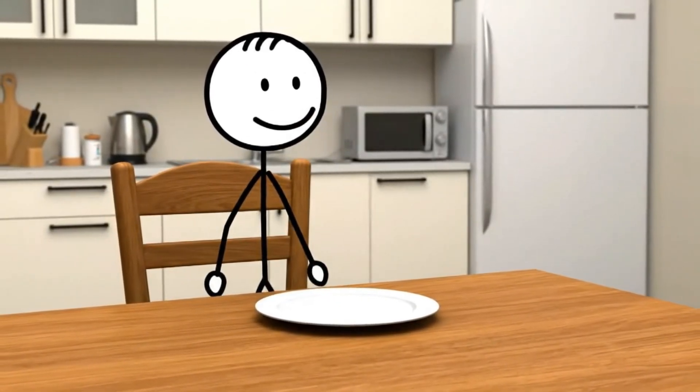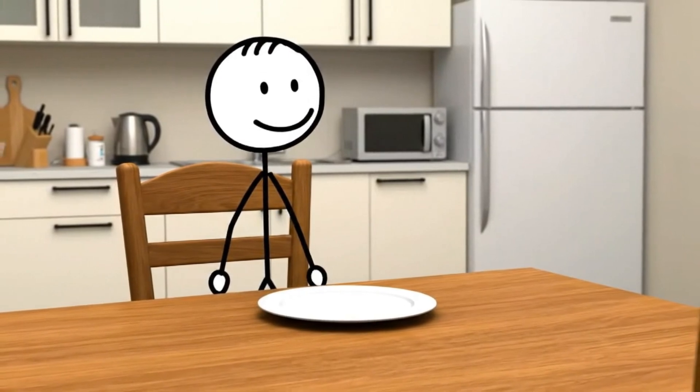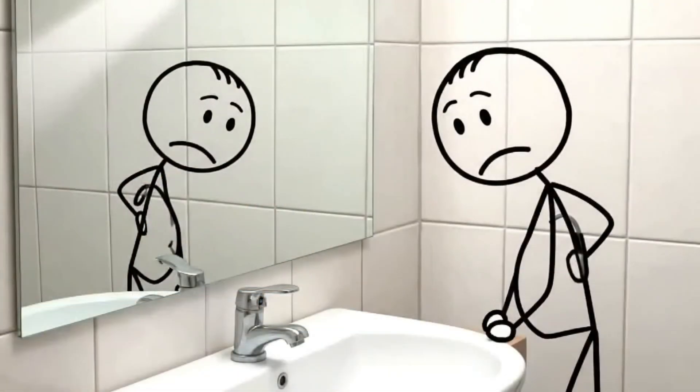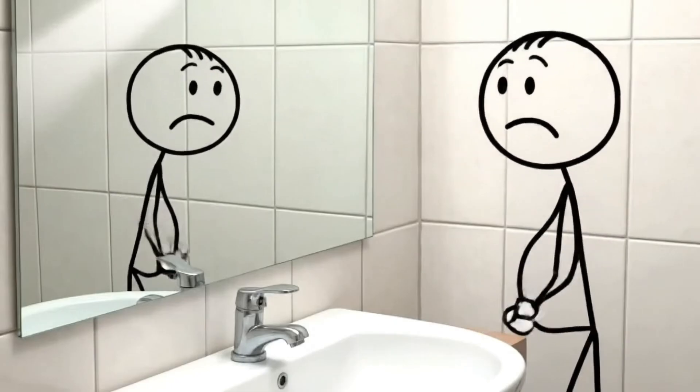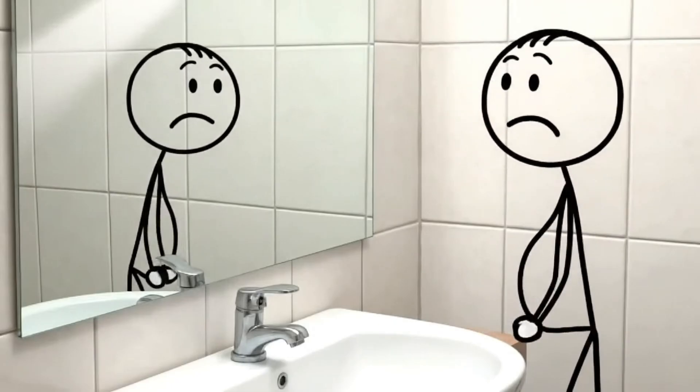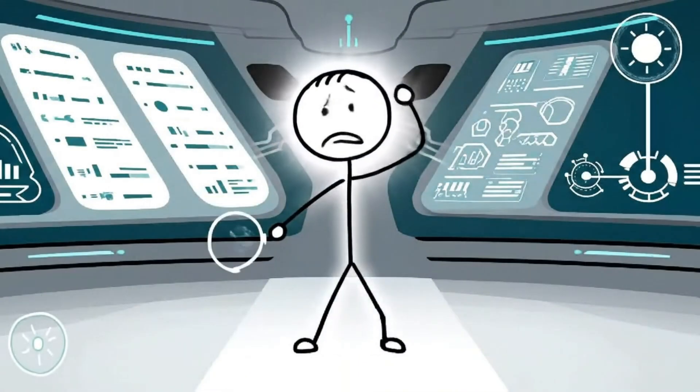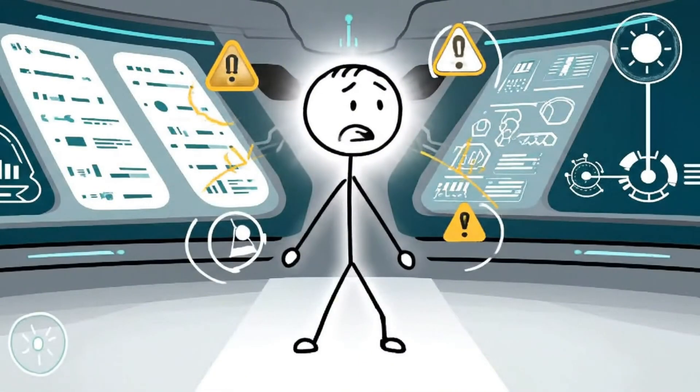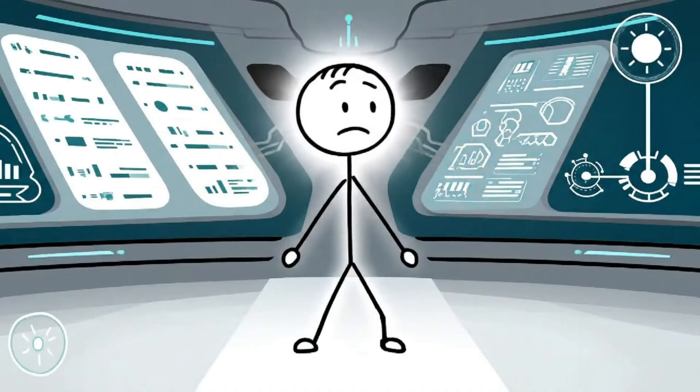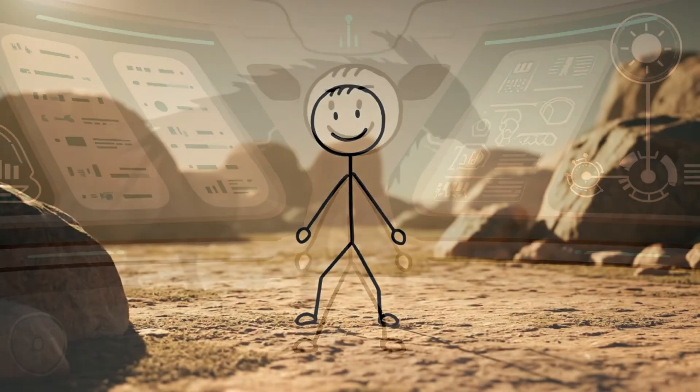Food is always available. Screens are always on. Dopamine is always dripping into the system. And when your body is constantly fed and constantly stimulated, it never gets a chance to reset. Hormones don't recover. Signals don't clear. Everything stays slightly elevated, slightly inflamed, slightly off.